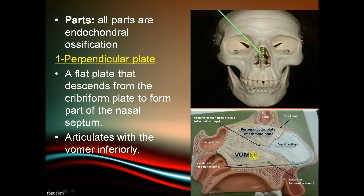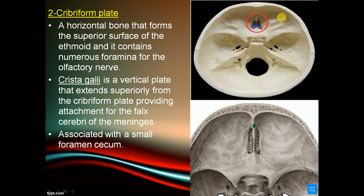The perpendicular plate articulates with the vomer inferiorly. The cribriform plate is a horizontal bone forming the superior surface of the ethmoid and contains numerous foramina for the olfactory nerve. The crista galli is a vertical plate that extends superiorly from the cribriform plate, providing attachment for the falx cerebri. The foramen cecum is associated with the cribriform plate and crista galli — very important for exams.